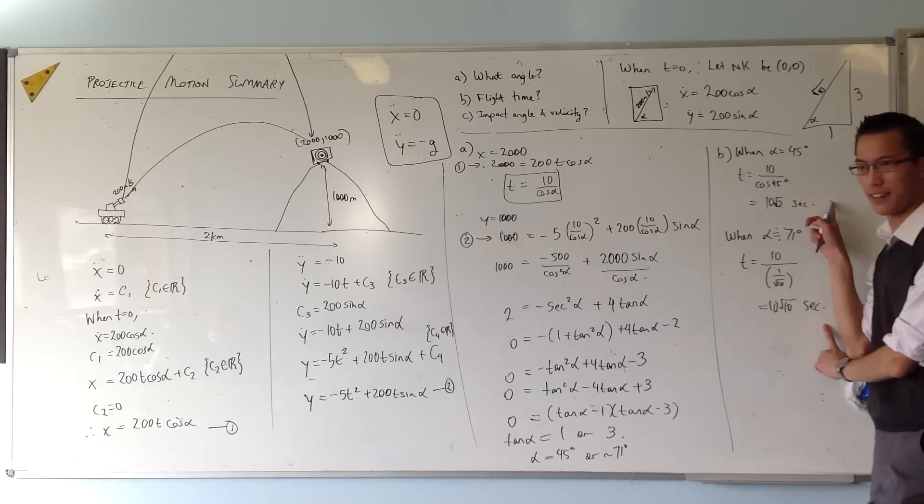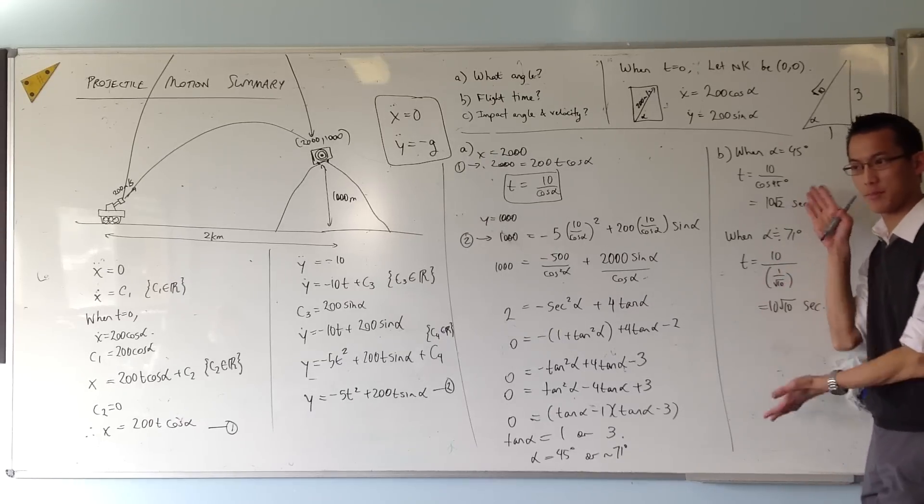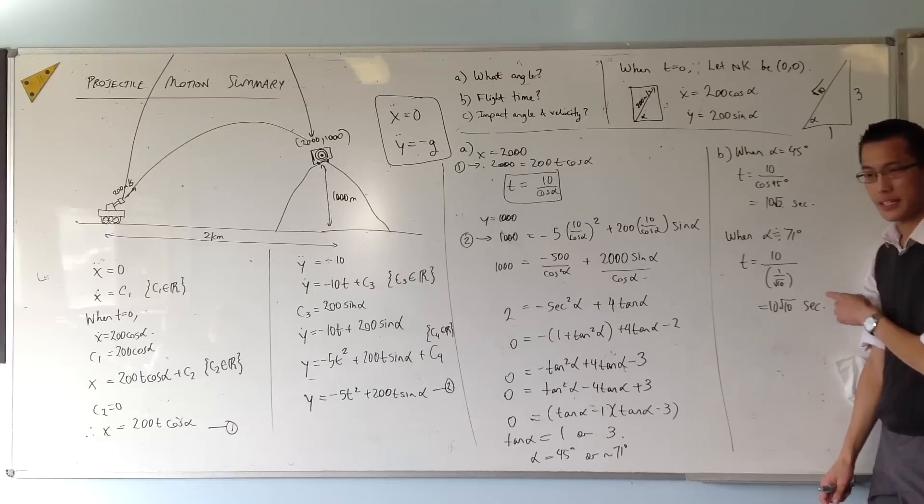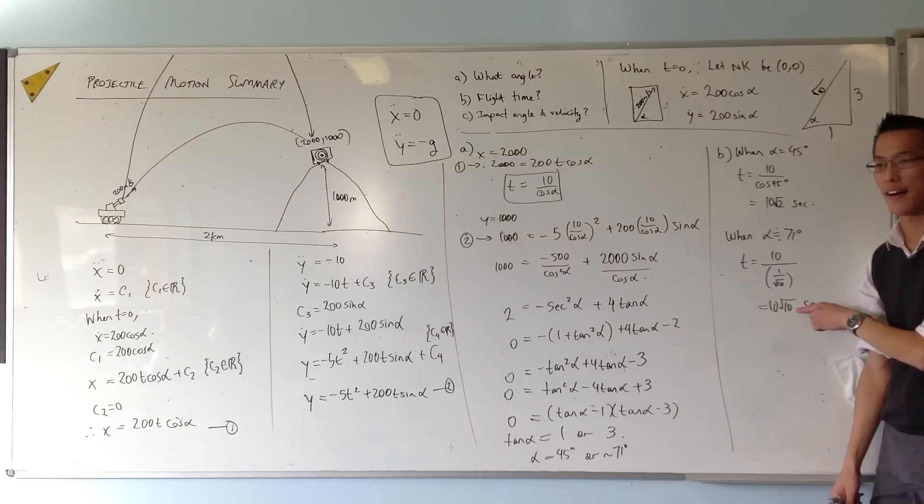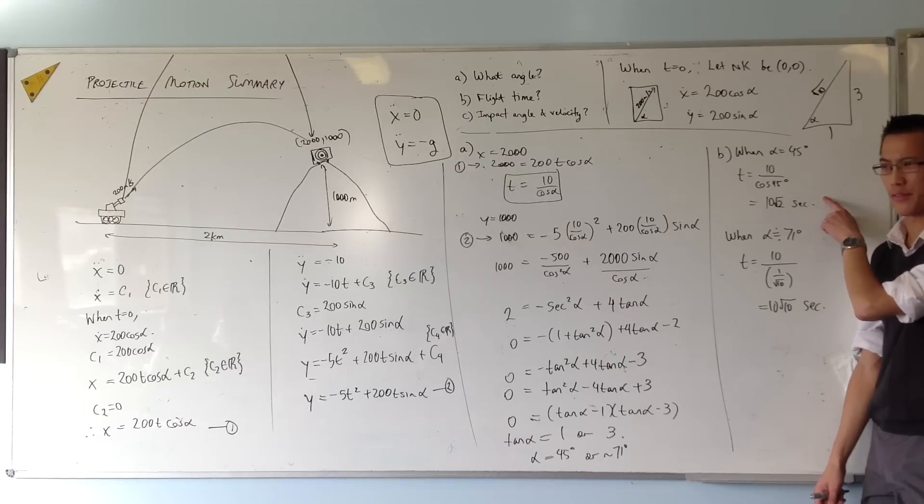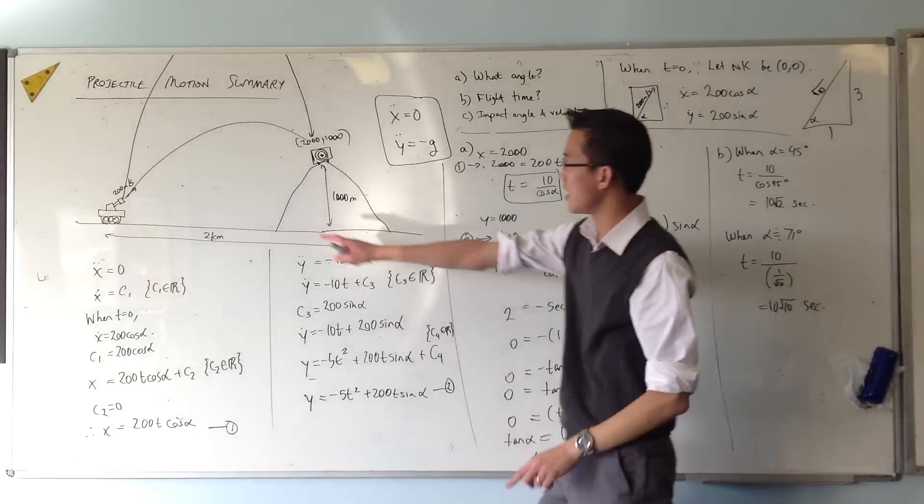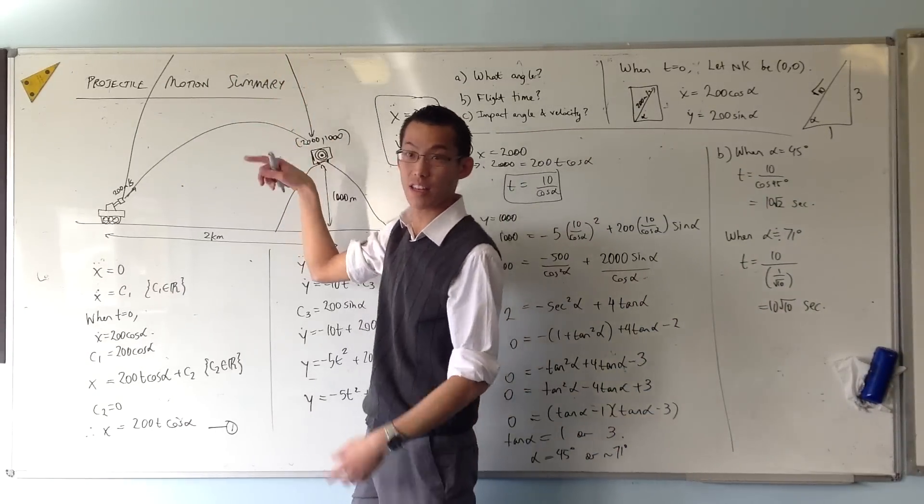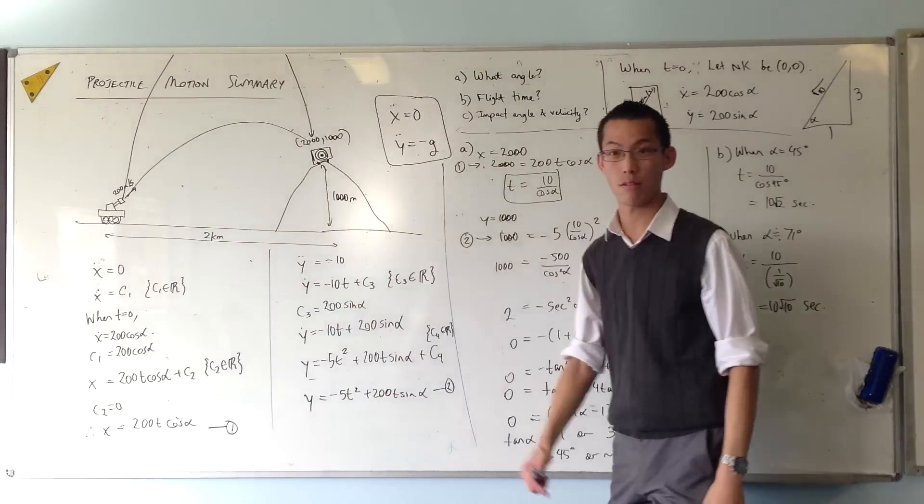Now let's just compare these for a second. You always want to get at what these numbers mean. This second approach takes root 5 times longer than this approach. Does that make sense? It does, because obviously it has a much greater distance to travel. So that's why it takes so much longer, even though it arrives at the same spot.